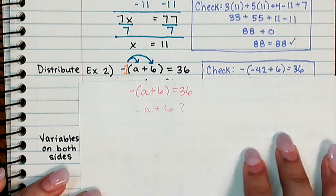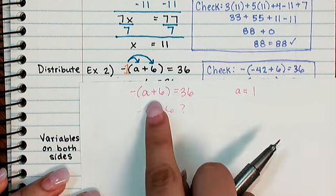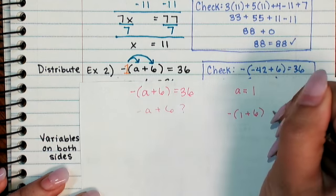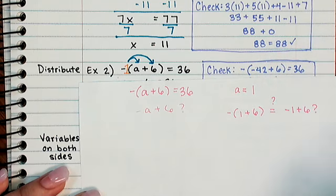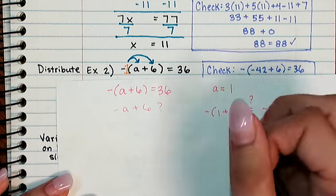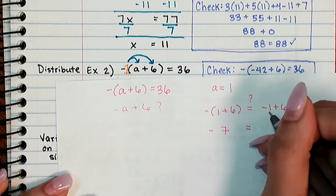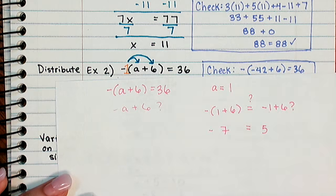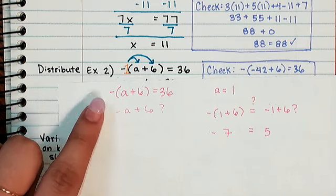And the problem with that is if we plug in, say, a equals 1. Negative 1 plus 6. Let's check. Does that equal minus 1 plus 6? 1 plus 6 is 7. Meaning that would give me a negative 7. Whereas on this side, negative 1 plus 6 gives me 5. So we can see that those are very much not the same thing. And no matter what I put in for a, I would probably be getting the same result. But it would not be equal. So we want to make sure that we're not thinking that these two are equivalent.